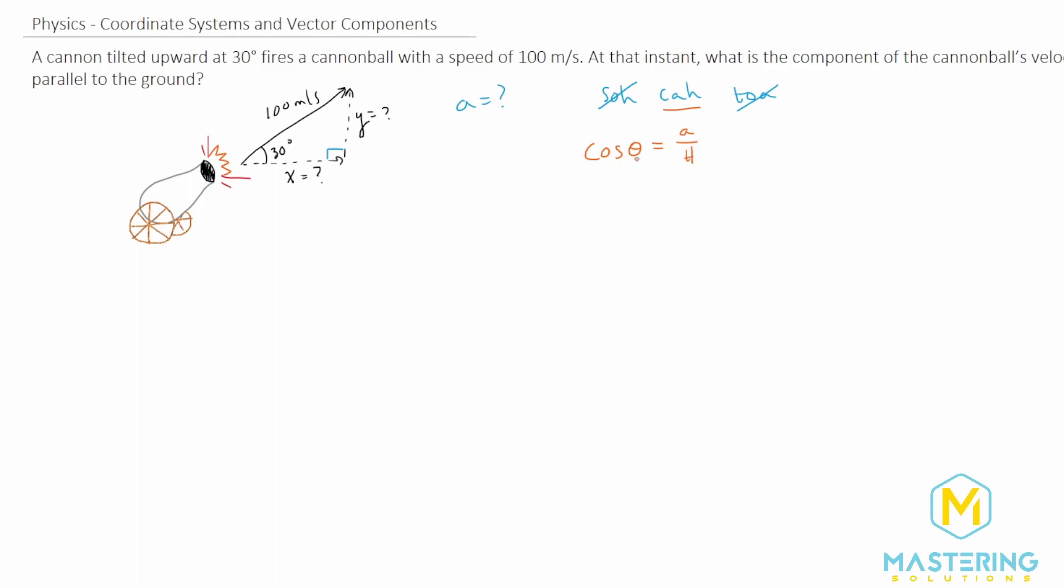We know the hypotenuse and we know the angle so let's isolate the adjacent. We'll multiply both sides by h so the adjacent is equal to h times the cosine of the angle theta.